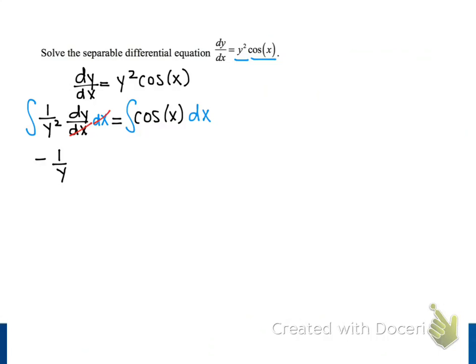On the right side, the antiderivative of cosine of x is sine of x. So we will write sine of x plus c1. I chose to write the constant as c1 instead of just c, because I know we will make a change to it before we're done with our solution.